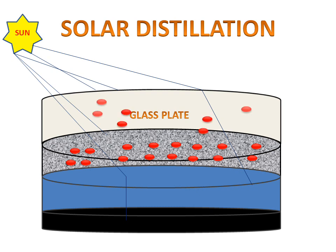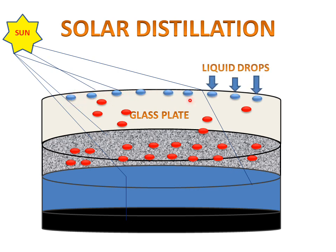By going upward they will be in contact with the glass plate surface where they will be converted into liquid drops. The vapors will be converted into liquid drops when they contact with the glass plate, and there we have a tap on the left and right hand side for collecting these liquid drops.